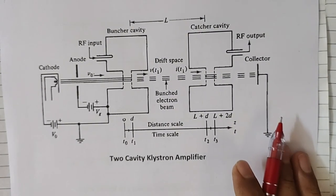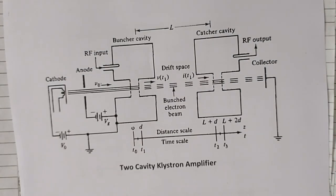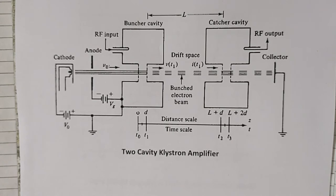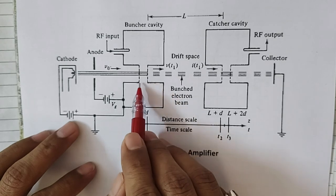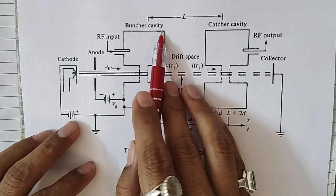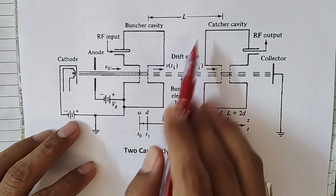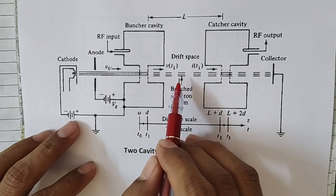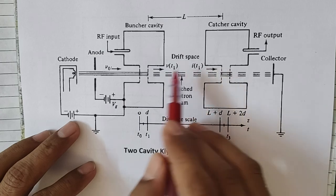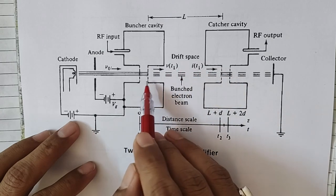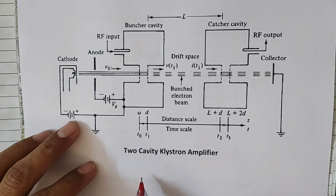So this is called the principle of velocity modulation, and on this principle all microwave tubes operate. We have discussed the two-cavity klystron amplifier — the principle is velocity modulation and maximum gain is achieved through maximum degree of bunching or efficient bunching. There are two control parameters: one is the grid spacing and another is the spacing between buncher and catcher cavities. We will discuss these in upcoming videos to understand how maximum gain can be achieved, what distance the two cavities should be placed at, and what is the role of grid spacing in the two-cavity klystron amplifier.